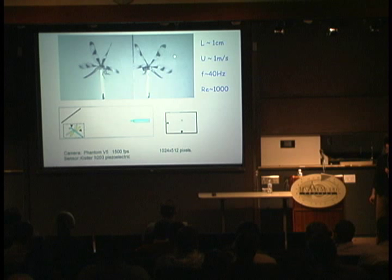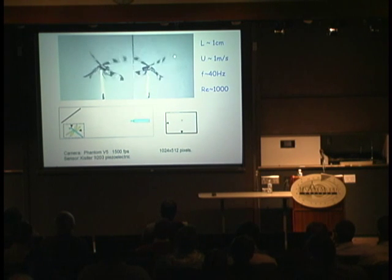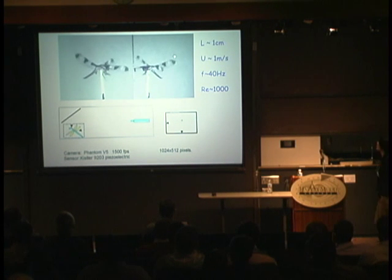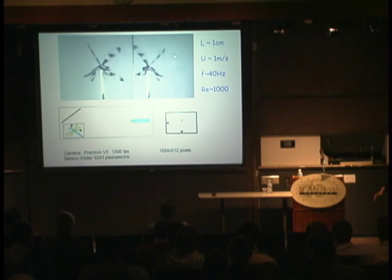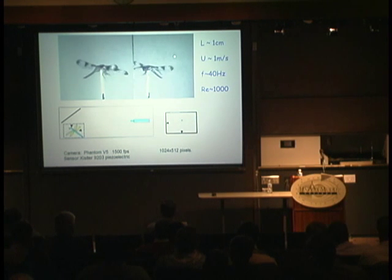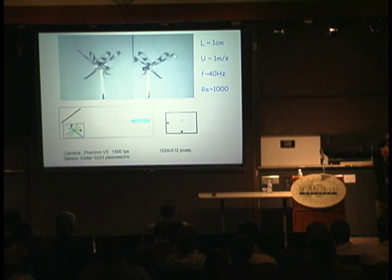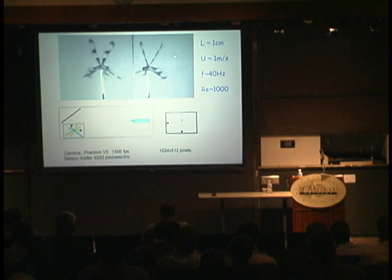If you walk, you walk at about a meter per second; we swim at about a meter per second. The wing beat frequency is about 40 hertz, varying by species. Birds flap on the order of hertz, hummingbirds 50 to 80 hertz, fruit flies about 200 hertz, and the highest is probably 900 hertz. The smaller it gets, the higher the frequency.